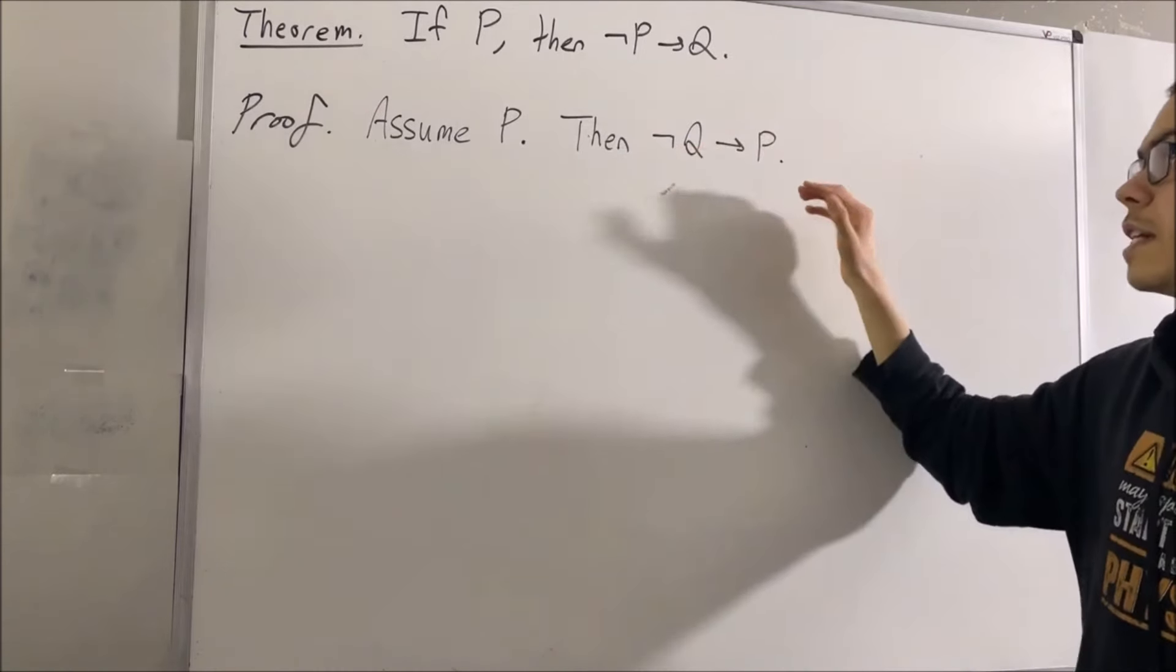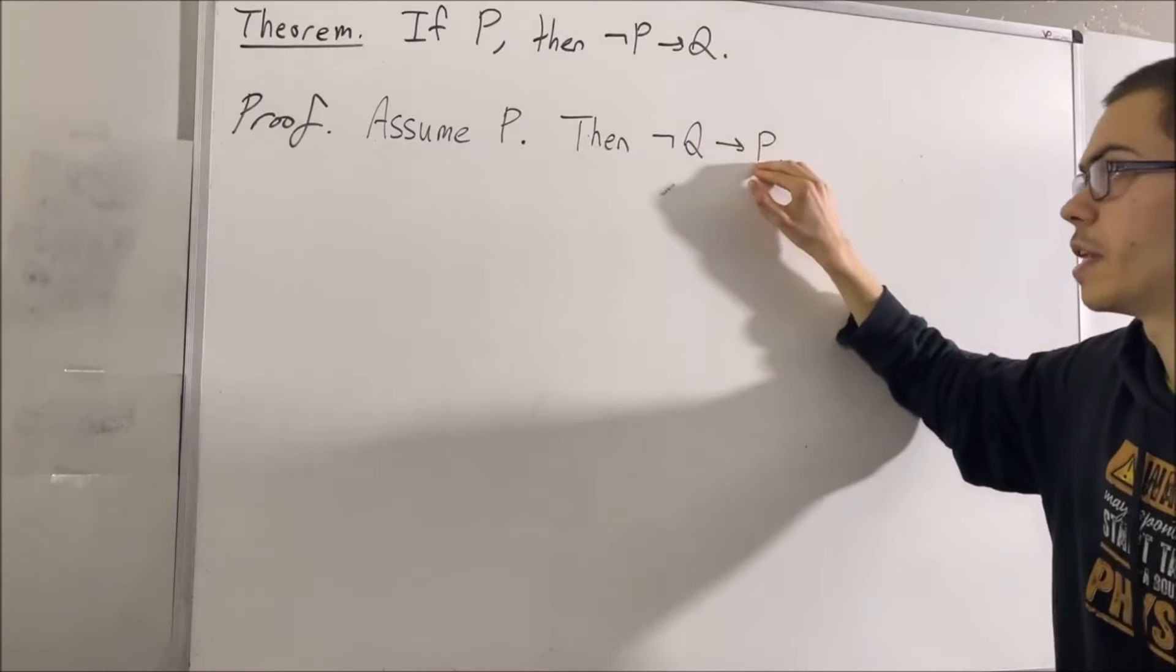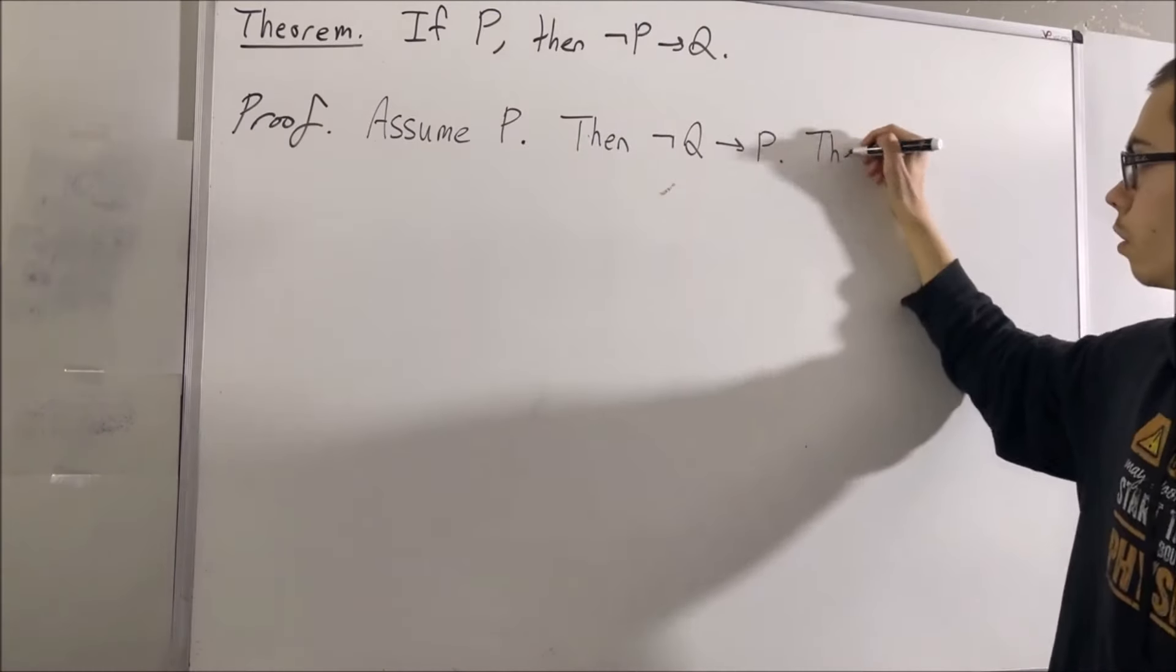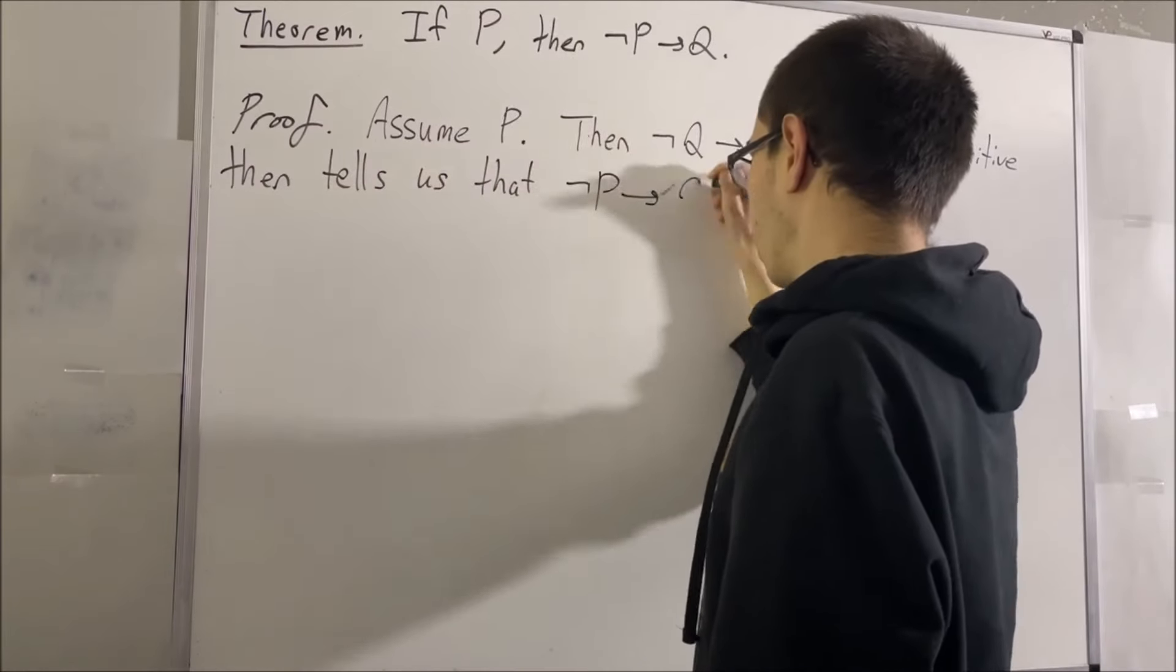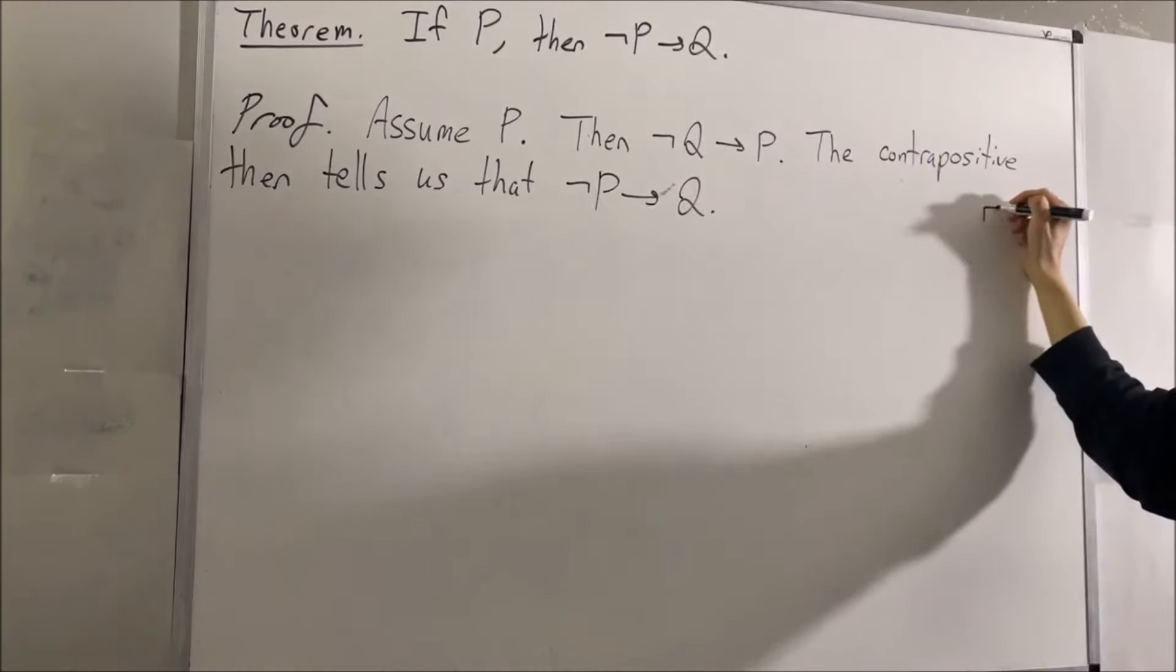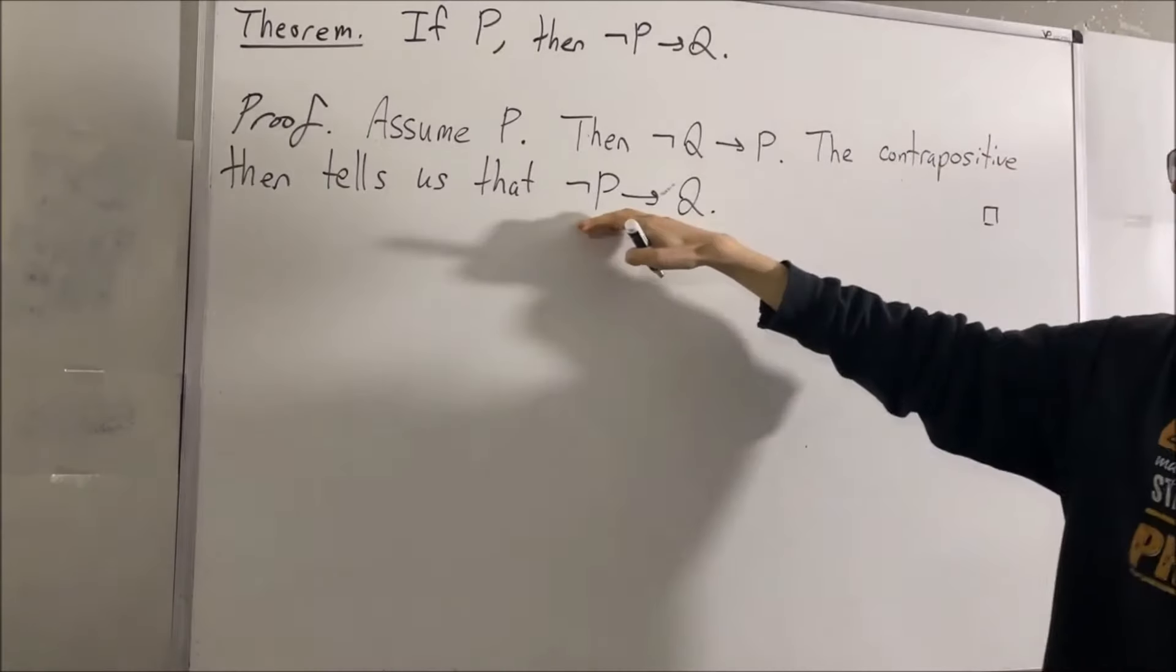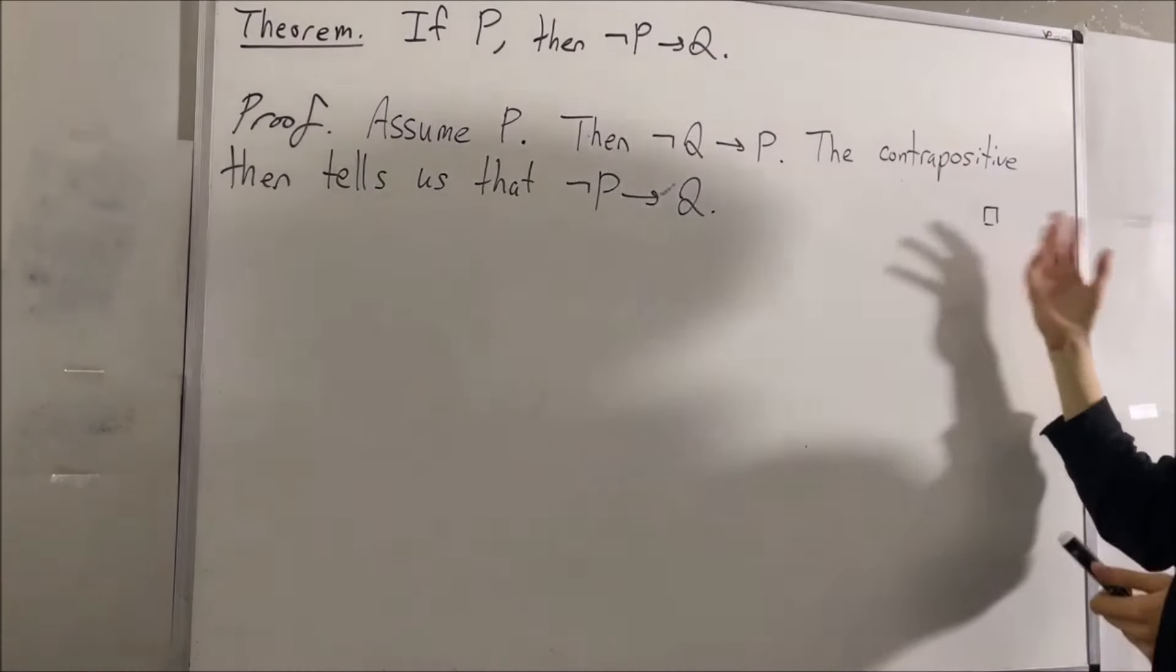Now, since P is true, clearly if not Q is true, then P will be true. And we actually proved this in a previous video - given a statement J is true, then any statement implies J.